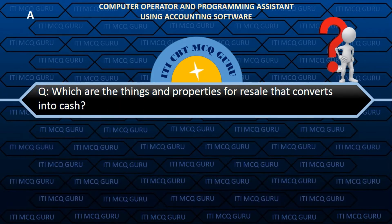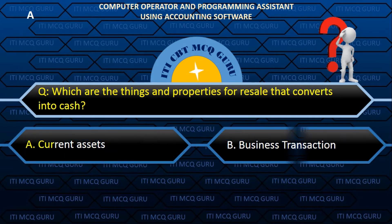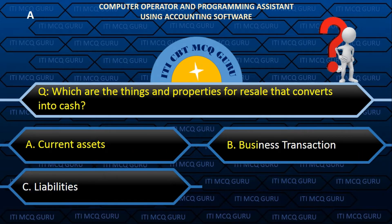Which are the things and properties for resale that convert into cash? A. Current assets.